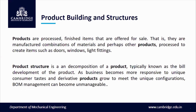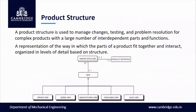In simple terms, product building and structure is a phenomenon of different types of products manufactured or processed in different ways by the combination of different materials and different characteristics, which are processed and manufactured to turn into a new innovative product — bringing good product building and good structure. A product structure is used to manage changes, testing, and problem resolution for complex products with a large number of interdependent parts and functions, or representation of the way parts fit together, organizing levels of detail based on the structures.